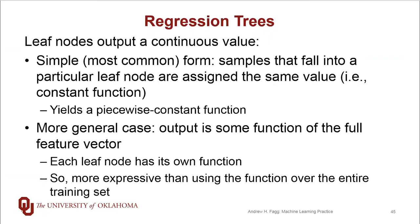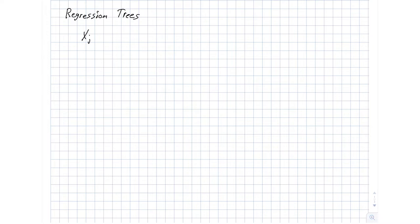Let's look at a bit of the math around regression trees — at least the simple form — and then we'll do a simple example in drawing form. Just as with our other regression approaches, we still have a training set composed of pairs of samples: a set x_j associated with some output value. We're going to focus on the scalar form of this, though y could be a vector. We'll measure the performance of our regression tree using mean squared error.